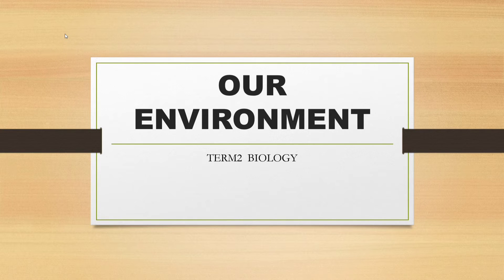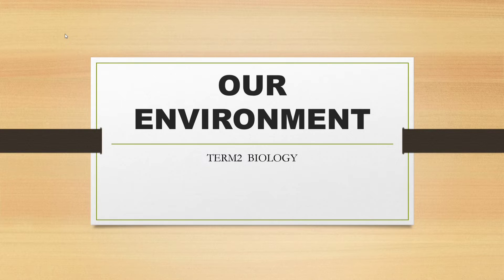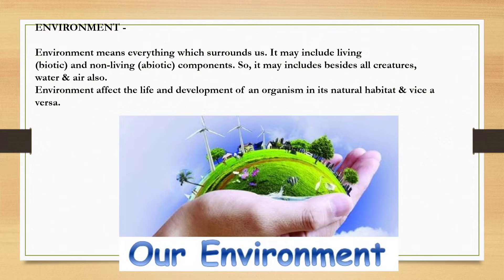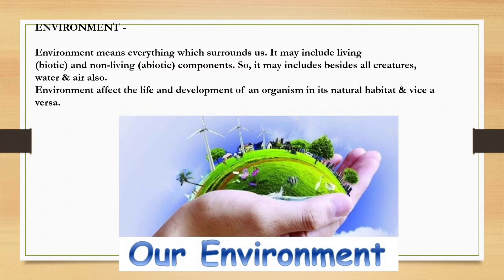Hello students, welcome to my channel Simply Biology. Today we are going to do Term 2 Chapter: Our Environment. Environment means everything which surrounds us. It includes biotic, that is living components, and abiotic, that is non-living components. Water, air, plants, and animals — they all are part of our environment. Environment affects the life and development of an individual or organism.